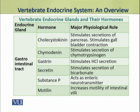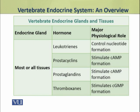Dear students, the gastrointestinal tract also produces many hormones. These hormones include cholecystokinin, secretin, gastrin, substance P, and motilin. Many of these regulate the secretions of digestive juices and enzymes.